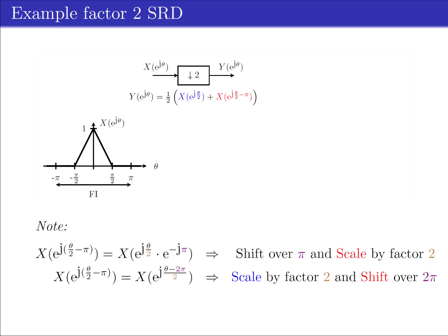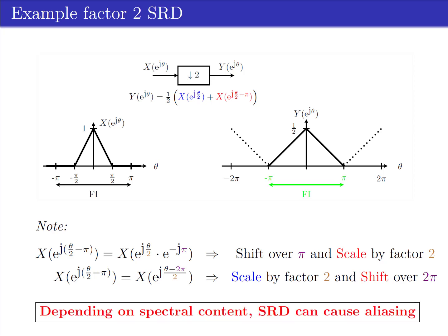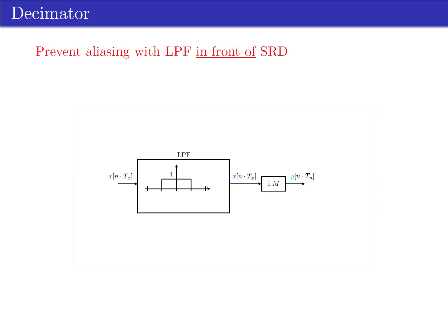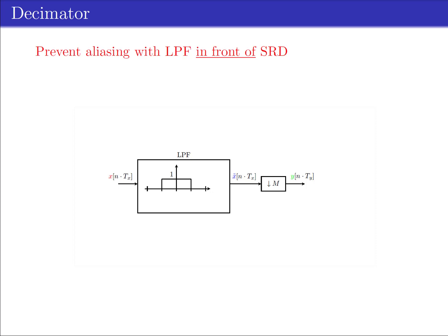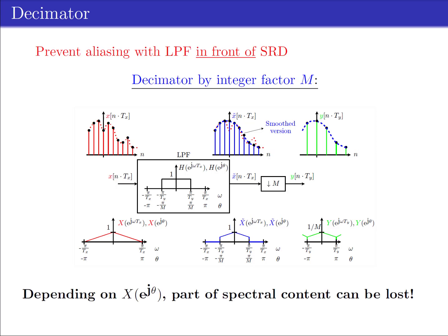When the DTFT spectrum X(e^{j*theta}) is 0 for |theta| >= pi/2, the first term and second term do not overlap, and the resulting spectral information is only stretched but not aliased. Thus we can conclude that depending on the spectral content of the input, the sample rate decrease device can cause aliasing. By using a low-pass filter in front of the SRD device, we can prevent aliasing, which results in a decimator. The cutoff frequency of the low-pass filter of a factor-M decimator is pi/M, as depicted in the figure. In time domain, the low-pass filter results in a smoothed version of the input sequence. In general, we should realize that depending on the spectral content of the input, parts of the spectral information can be lost when applying a decimator.